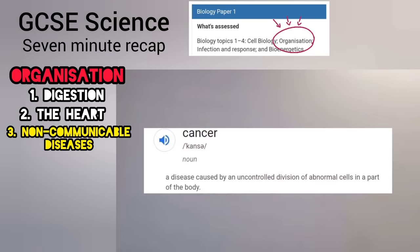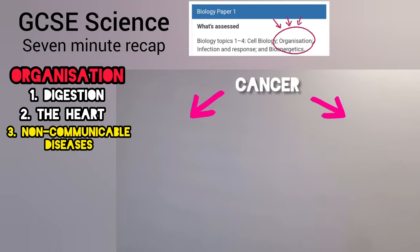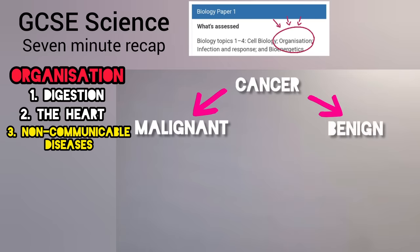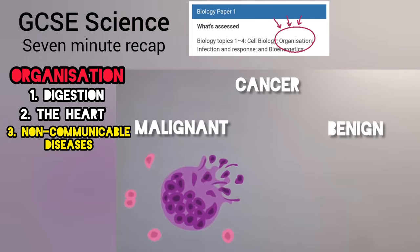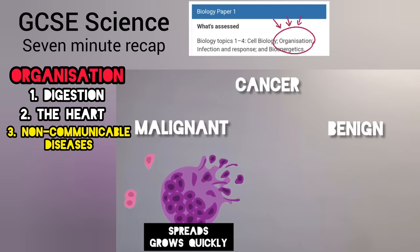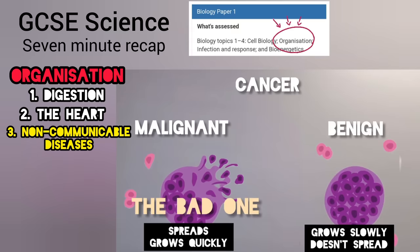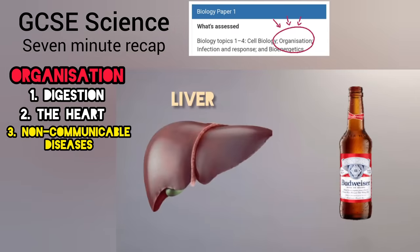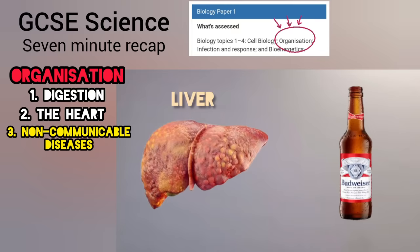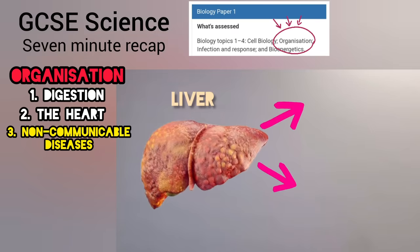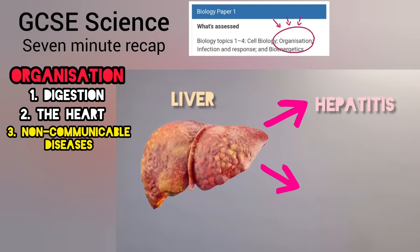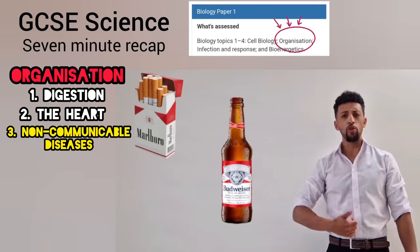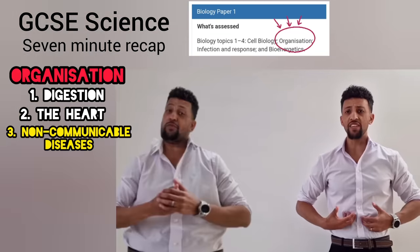Cancer is when cells grow with no control. With this disease there are two types — one's malignant and one's benign. Malignant spreads and it grows real quick — with metastasis it makes you sick. Benign grows slow and it's self-contained — docs can remove it. The liver breaks down alcohol — drinking too much will take its toll. Hepatitis and cirrhosis. Too much fat will make us obese.